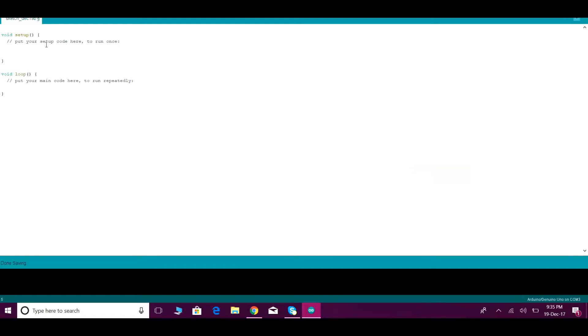Arduino board code is same like C programming code. It mainly contains two functions: void setup and void loop. Commands that run once are written in void setup, and commands that run over and over again are written in void loop.